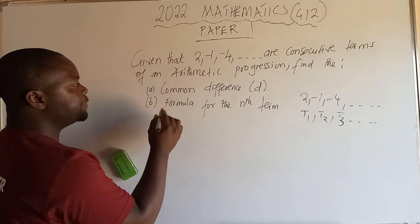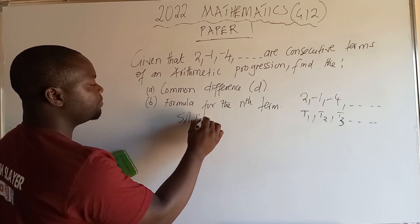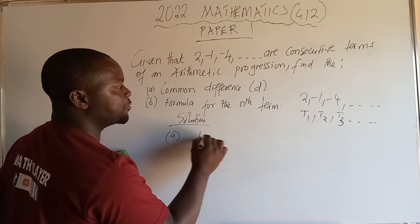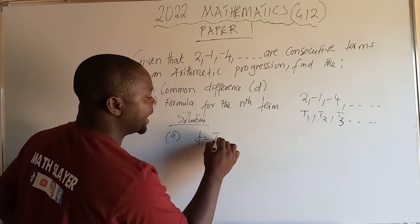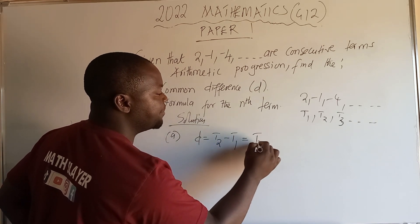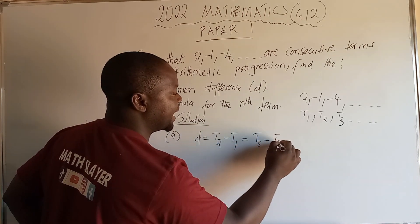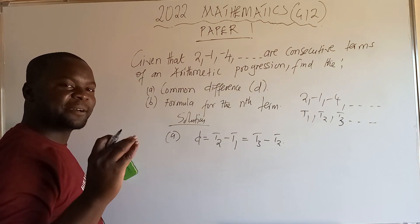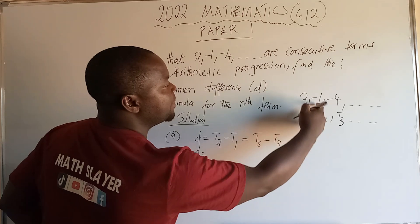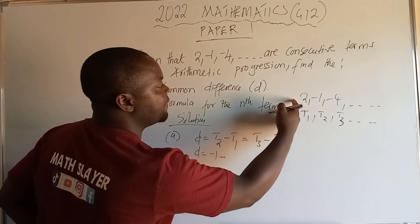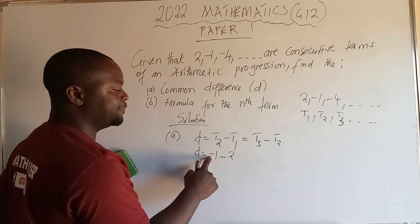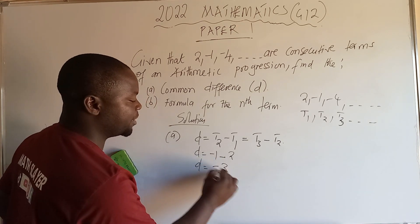So to find the common difference D, D is equal to the second term minus the first term, or the third term minus the second term — the answer is purely the same. So D equals negative one minus two, which gives us negative three. That's the common difference.